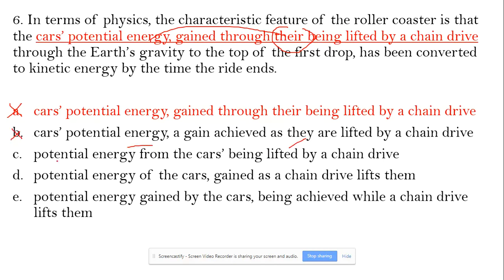Now, C: potential energy from the car's being lifted. Here, 'being lifted' is incorrect, and after the apostrophe, there should be a noun to justify what 'car's' is talking about, what part it has that is being lifted. So, C is out.